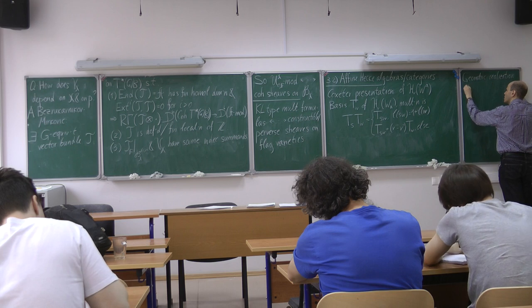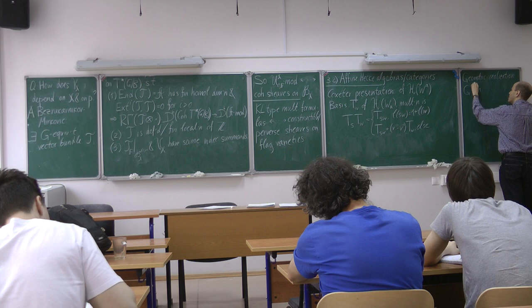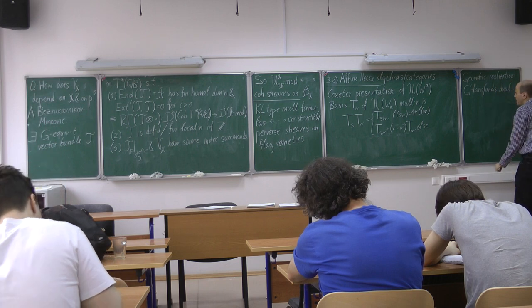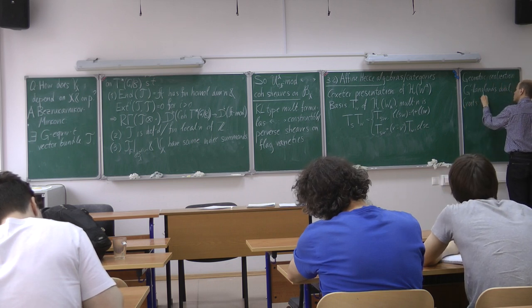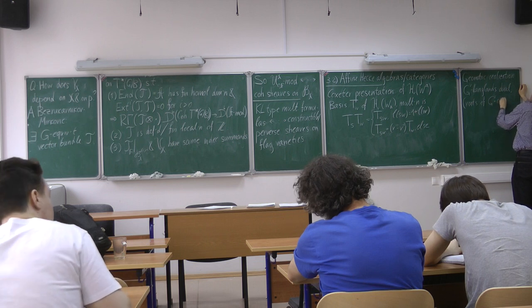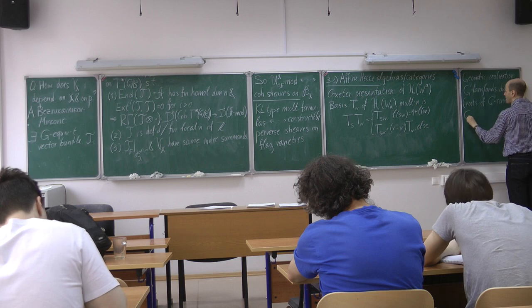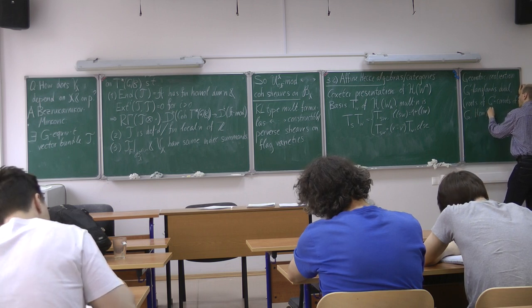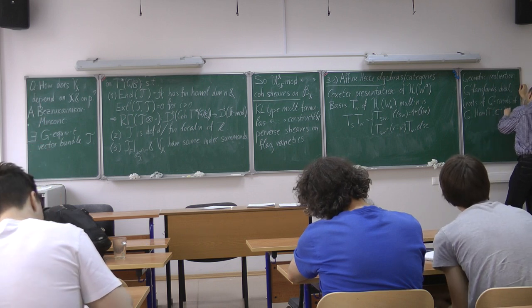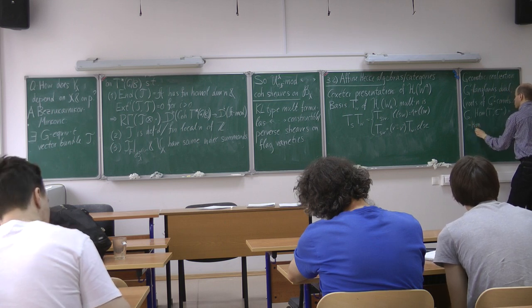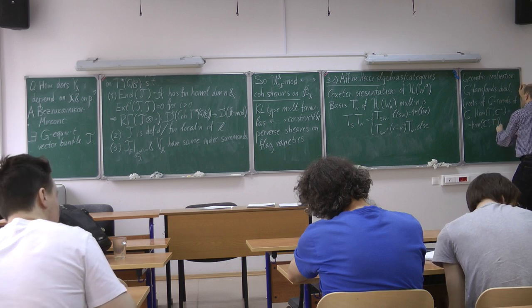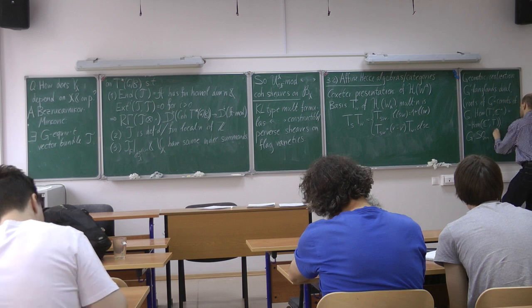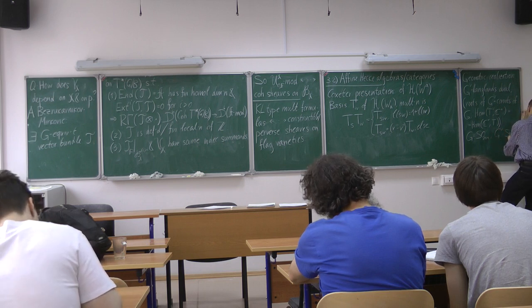So first of all I need to look at the Langlands dual group. So Langlands dual - what is that? So roots of G check is the same as co-roots of G, and the lattice of characters of the corresponding maximal torus is the lattice of one parameter subgroups of the original torus T in G. So for example if G is SO(2N+1), then G check is going to be SP(2N).